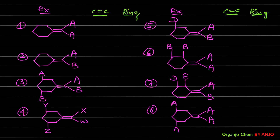Example 1: In this alkene, the SP2 carbon has two identical groups. Therefore, geometrical isomerism is not possible from the alkene side — we don't need to check the second condition once identical atoms are found on one side. For the cycloalkane part, no disubstituted carbon is present anywhere in the ring. So example number 1 cannot show GI.